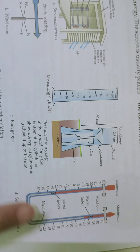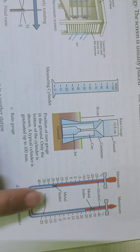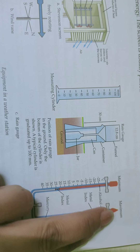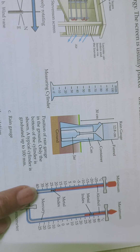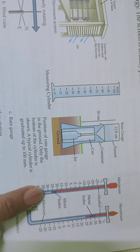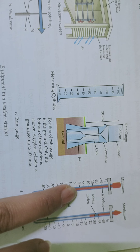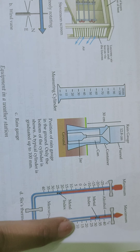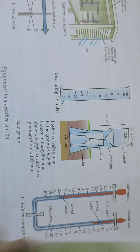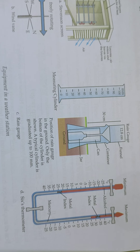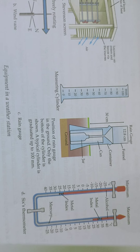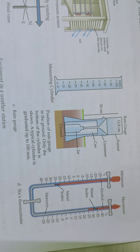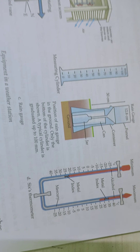This is the picture of the Six's Maximum and Minimum Thermometer. If you see, it has two limbs and two bulbs at the bottom. The limbs are connected by a U-shaped tube. The blue color shows mercury and the red one is actually alcohol. Both limbs are filled with mercury and alcohol. The working will be made very clear to you on the YouTube link I am also attaching with this video.